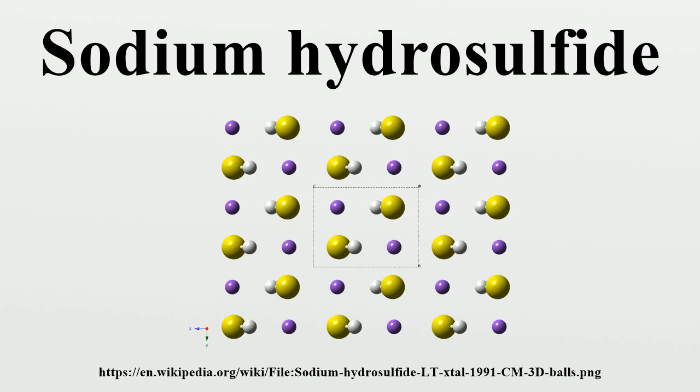The usual laboratory synthesis entails treatment of sodium methoxide (NaOMe) with hydrogen sulfide: NaOMe + H2S → NaHS + MeOH. Industrially, NaOH is employed as the base. The quality of the NaHS can be assayed by iodometric titration, exploiting the ability of HS- to reduce I2.